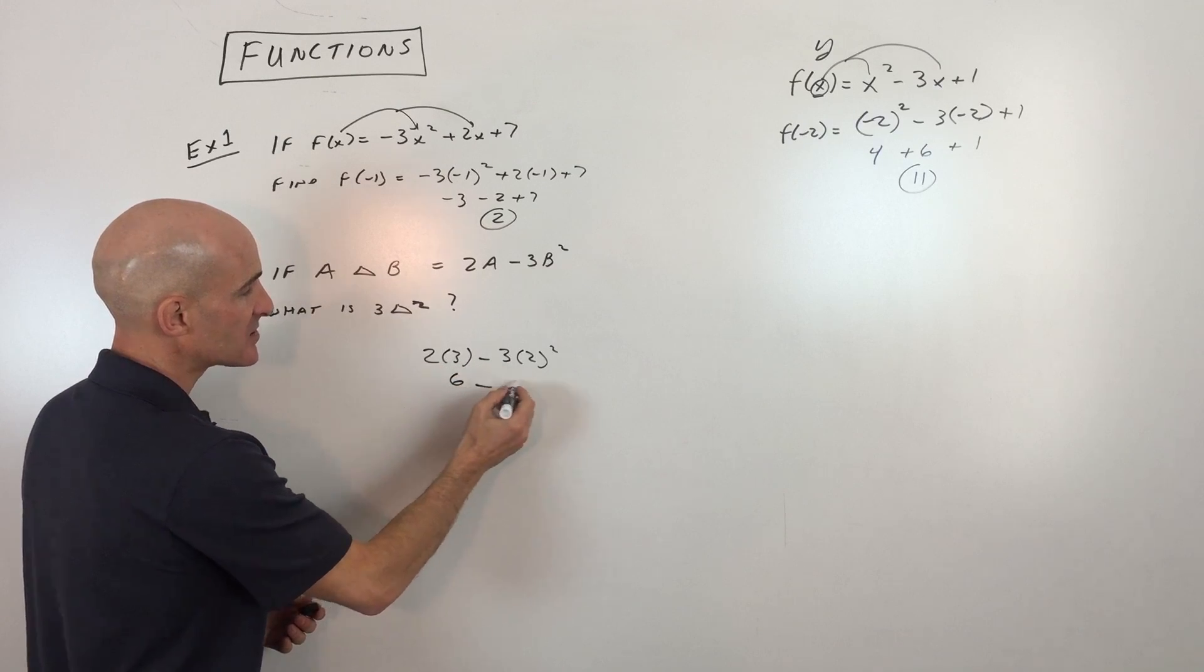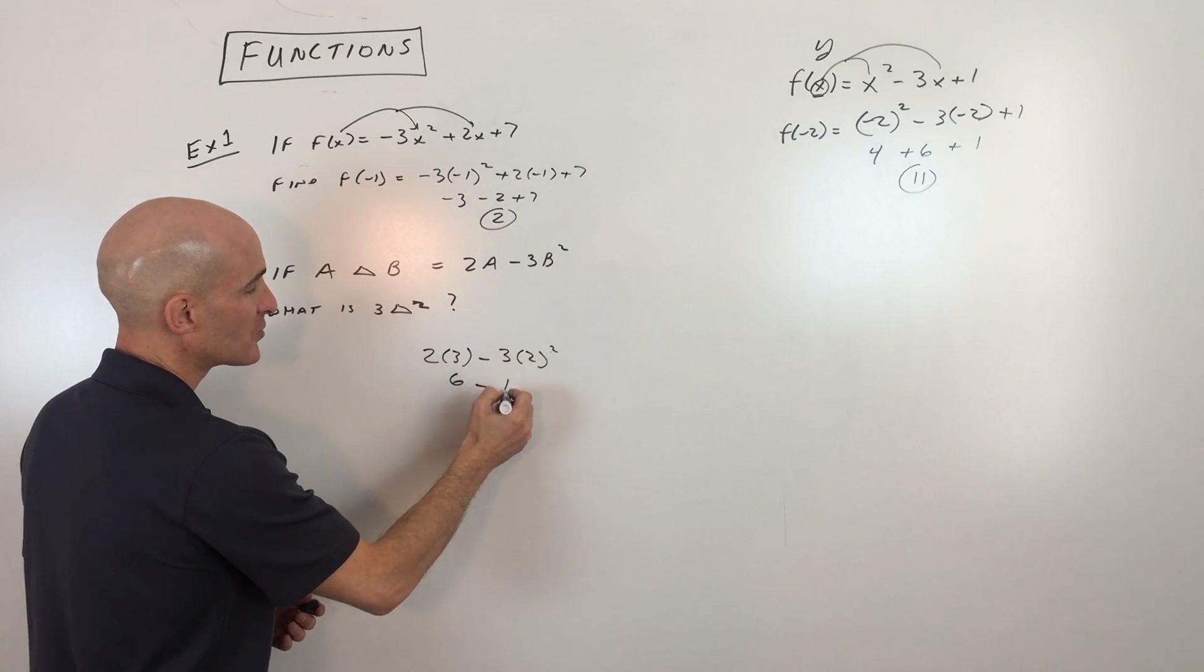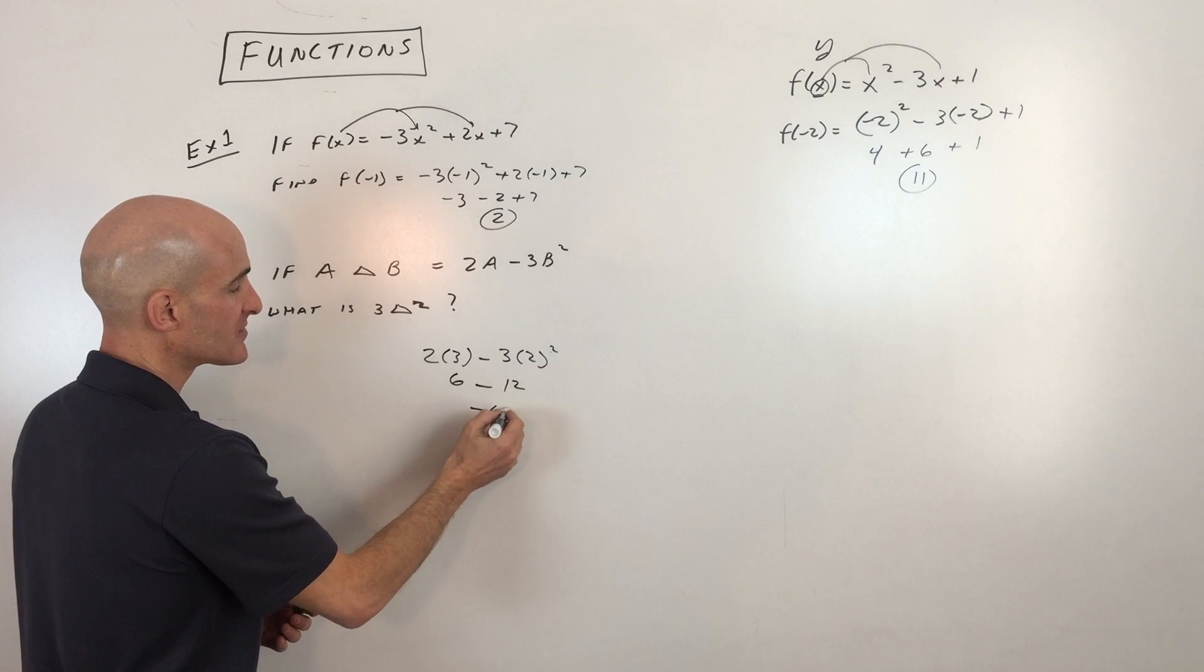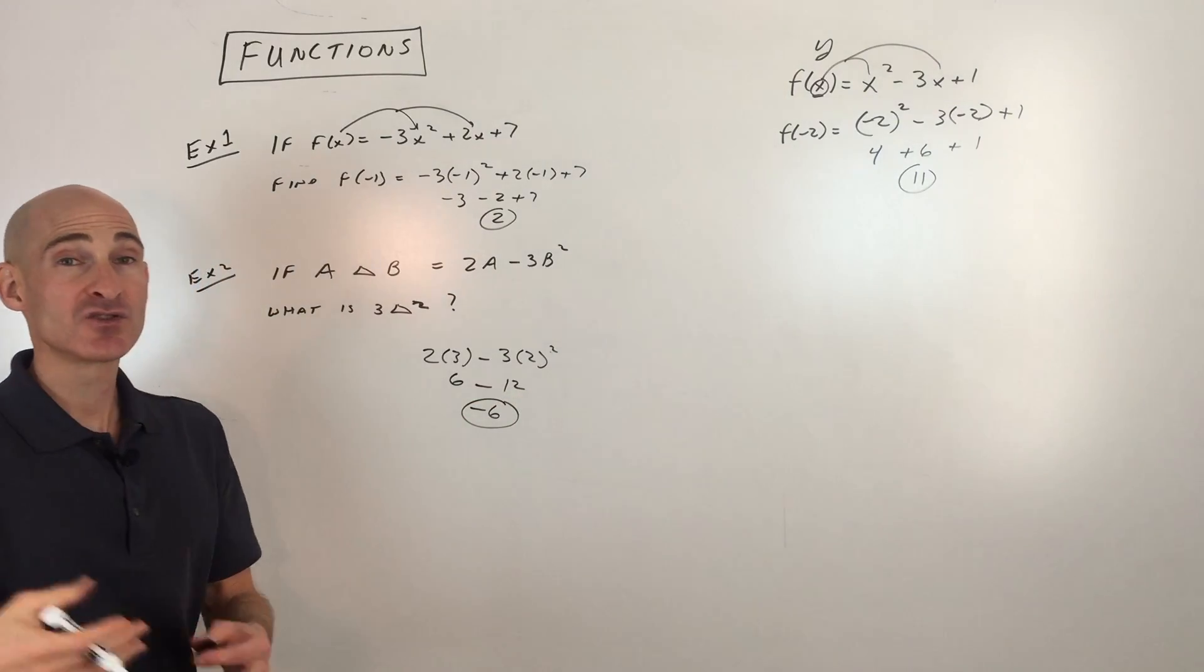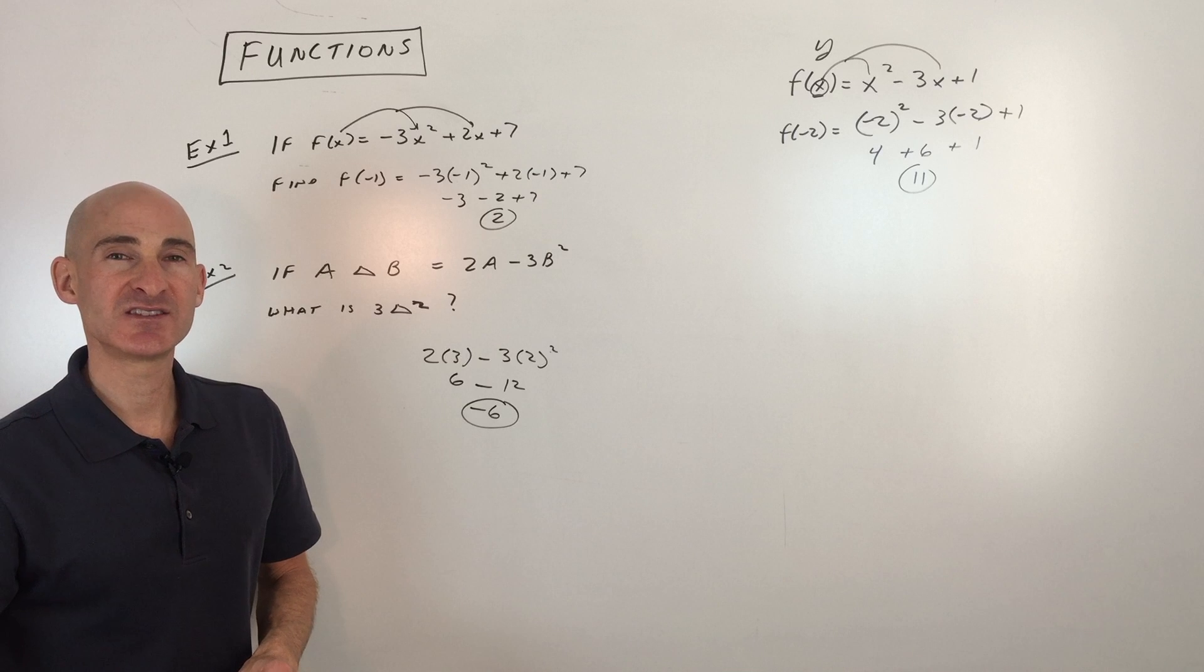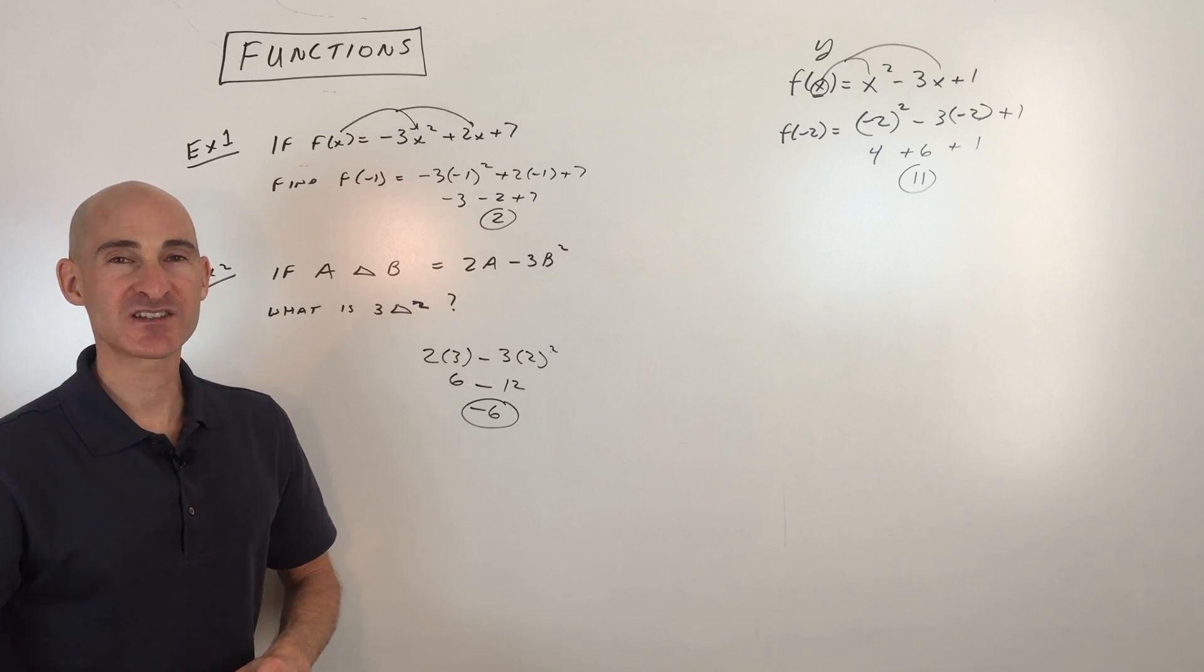So this is going to be 2 times 3 is 6. 2 squared is 4 times 3 is 12. 6 minus 12 is negative 6, and you got it. So definitely understand how to work with functions. It's an easy one to get right on the ACT, and it's something that they'll be testing you on.